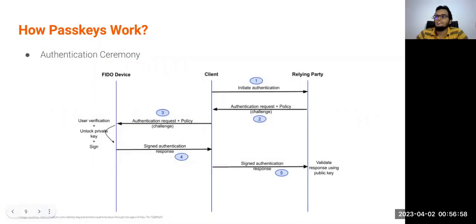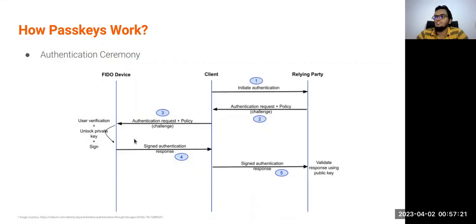In authentication, the relying party sends a challenge to the FIDO device. The FIDO device performs user verification and unlocks the private key. It then signs the challenge using the stored private key and sends the signed authentication response back to the relying party. The relying party validates the response using the previously stored public key and completes the authentication.